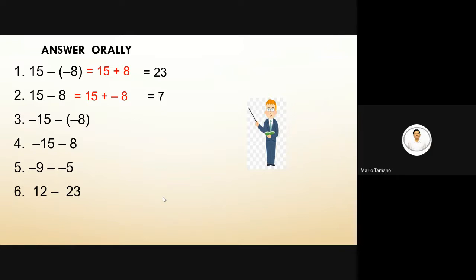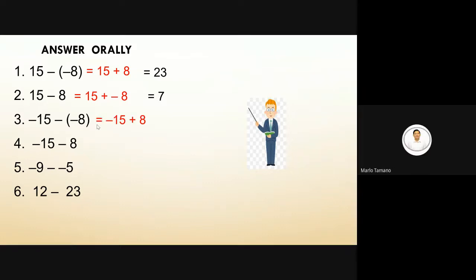Number three: negative 15 minus negative 8. The equivalent addition is negative 15 plus positive 8. The answer is negative 7.